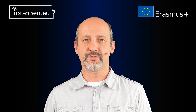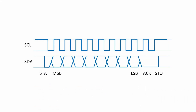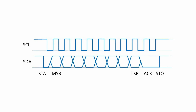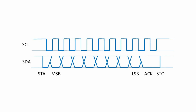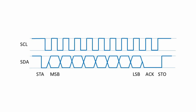The data is sent using frames of bytes. Every frame begins with a sequence of signals called the start condition. This sequence is detected by slaves, causing them to collect the next 8 bits that form the address byte, which is unique for every circuit on the bus. If one of the slaves recognizes its address, it remains active until the end of the communication frame. Other slaves become inactive.